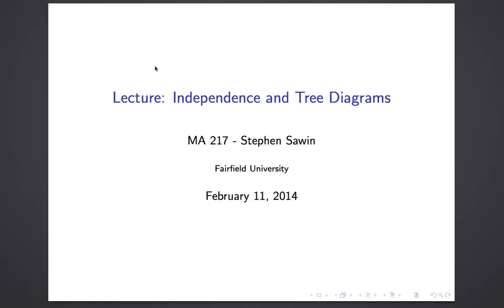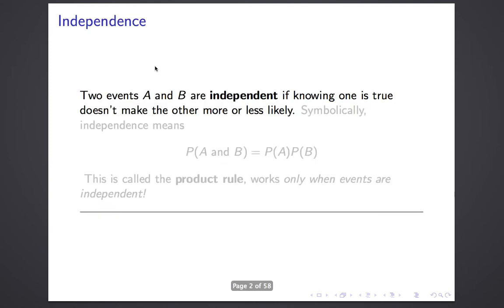This is the Math 217 lecture on advanced probability, including independence and tree diagrams. Independence is a notion we've talked about before in the context of relating categorical variables. It's the same notion here. The language will seem a little bit different, and using the language of probability will give us a more precise understanding of independence, but the underlying idea is the same.